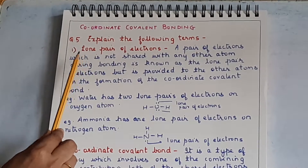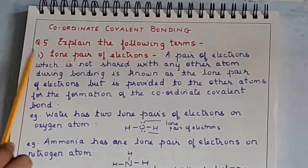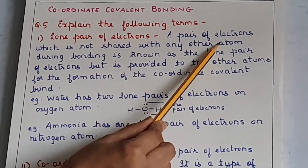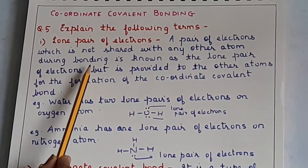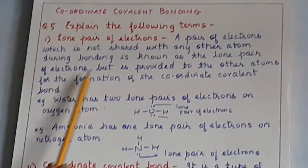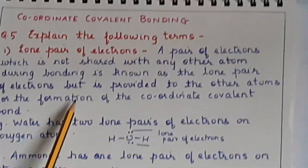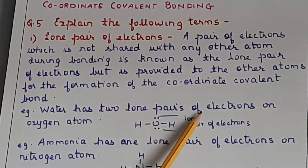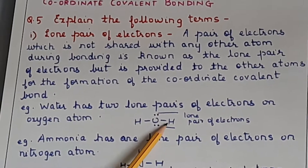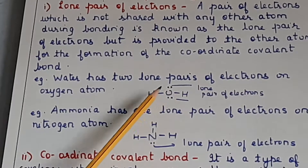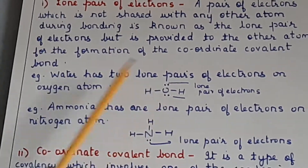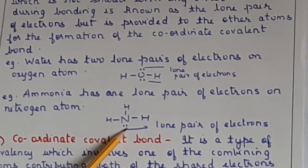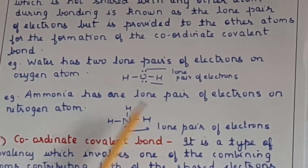The first important term is lone pair of electrons - give five stars to this. A pair of electrons which is not shared with any other atom during bonding is known as the lone pair of electrons, but it is provided to another atom for the formation of the coordinate covalent bond. Water has two lone pairs of electrons on the oxygen atom, and ammonia has one lone pair of electrons on the nitrogen atom.